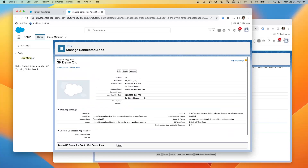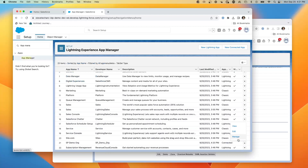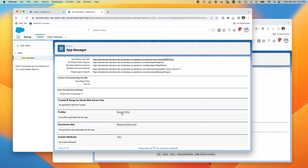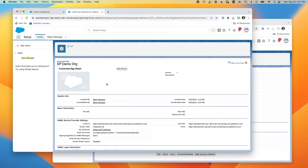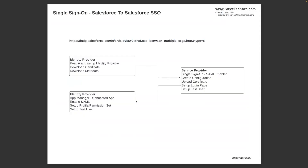Now I have the connected app 'SP Demo Org'. I go back to App Manager, manage this app, and assign it to specific profiles. Since we're using system administrator, I give this app access to that profile. Now the profile is set up. To review: we've set up the identity provider, downloaded the certificate and metadata, went to the service provider and created the SSO configuration, uploaded the certificate, set up the login page, have the test user in both places, and back in the identity provider we set up the connected app, enabled SAML, and set up the profile.